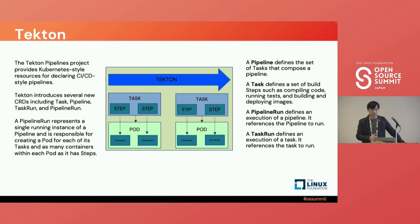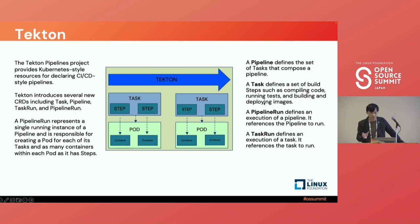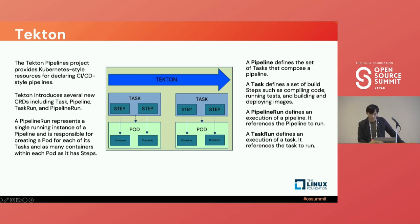Besides Argo, IBM also integrated Tekton, another popular container-native orchestration engine, into Kubeflow pipeline. Similar to Argo's workflow CRD, Tekton also implements a set of CRDs to represent the pipeline, including Pipeline, Task, PipelineRun, and TaskRun. A Task defines a set of steps you want to perform within a pod. PipelineRun and TaskRun represent the running status of the pipeline and task, and contain the status of the execution, input, output, and final step.